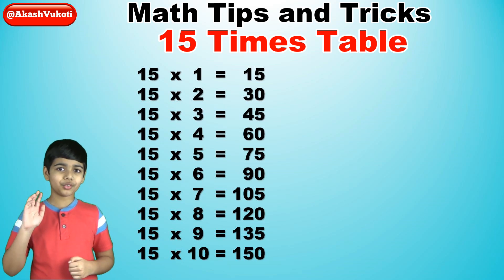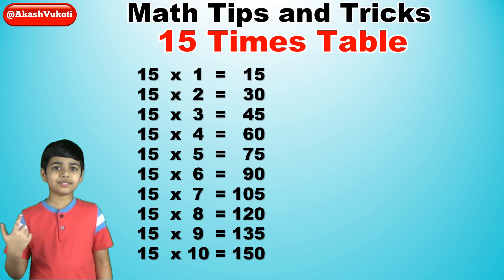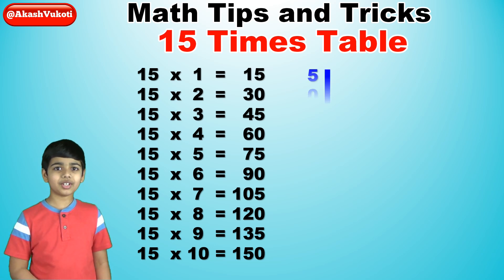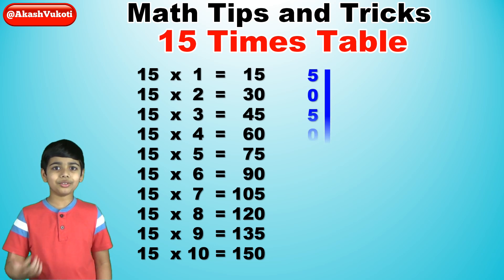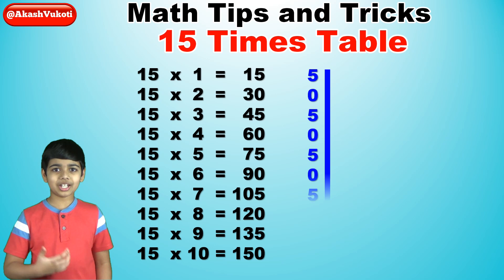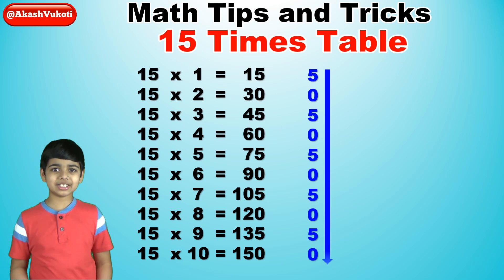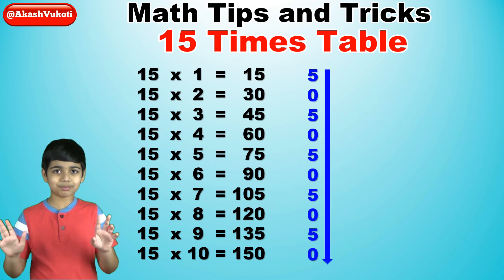First, for the 1s digits, we'll just write 5, 0, 5, 0, 5, 0, 5, 0, 5, 0. Simple.